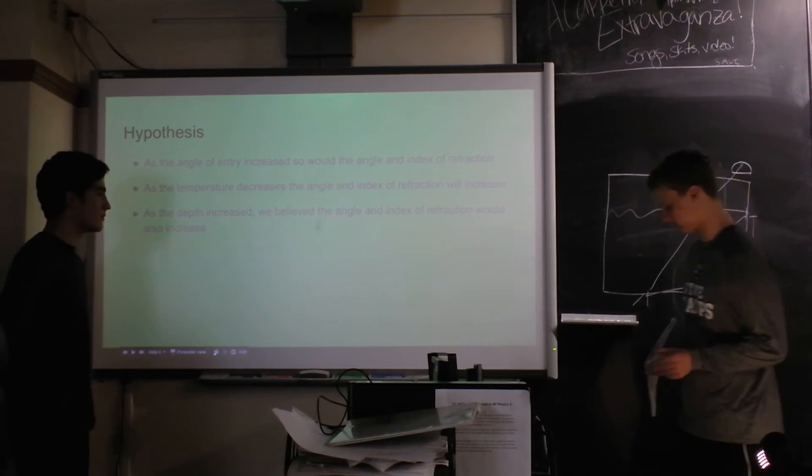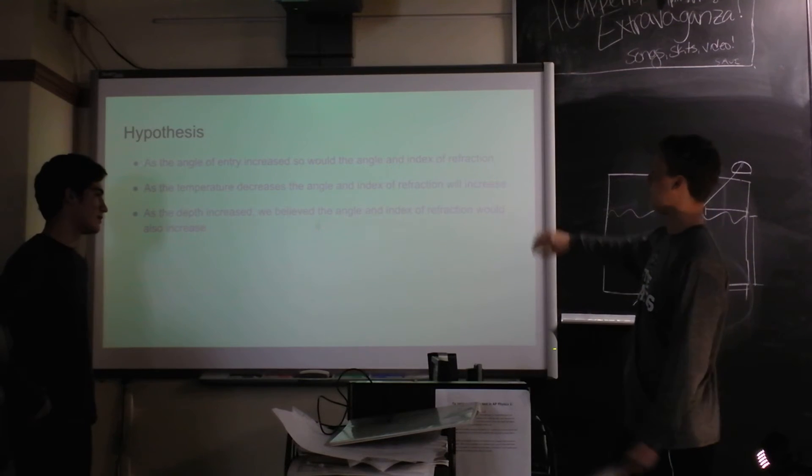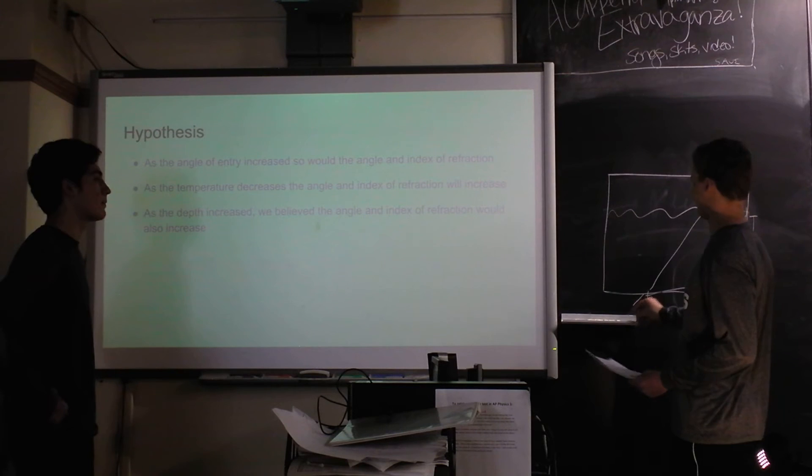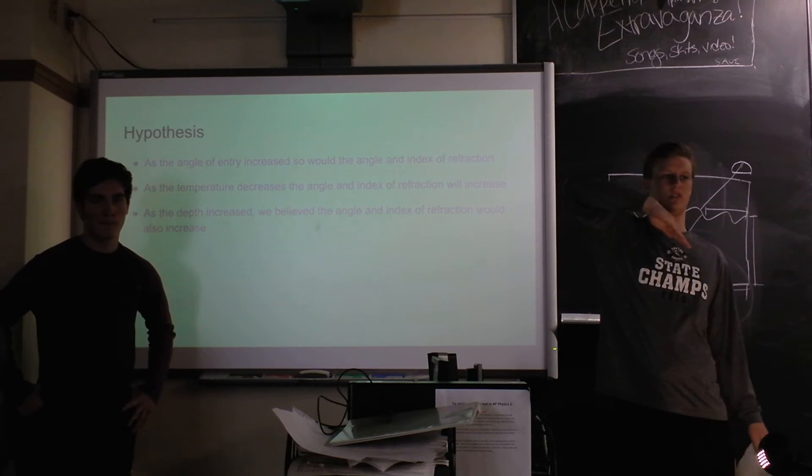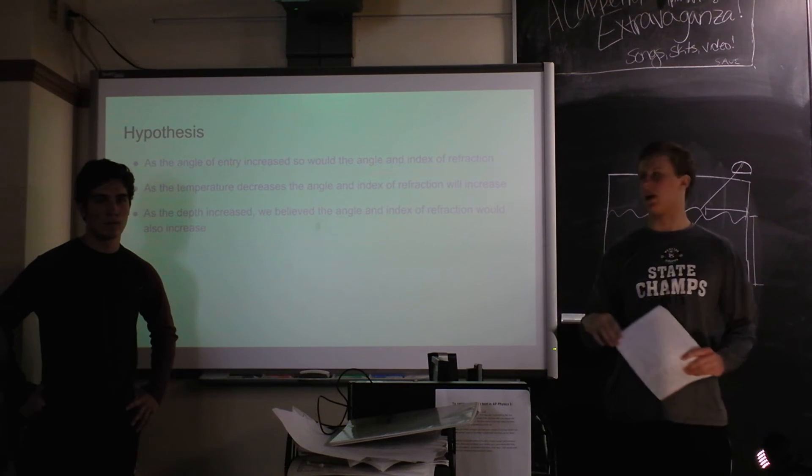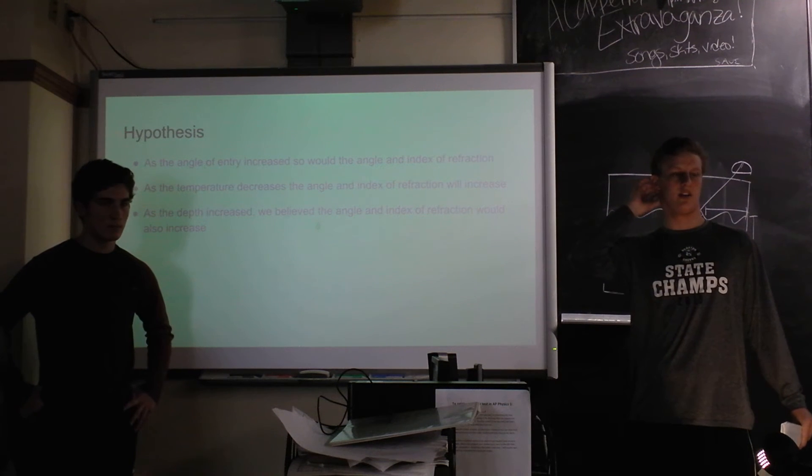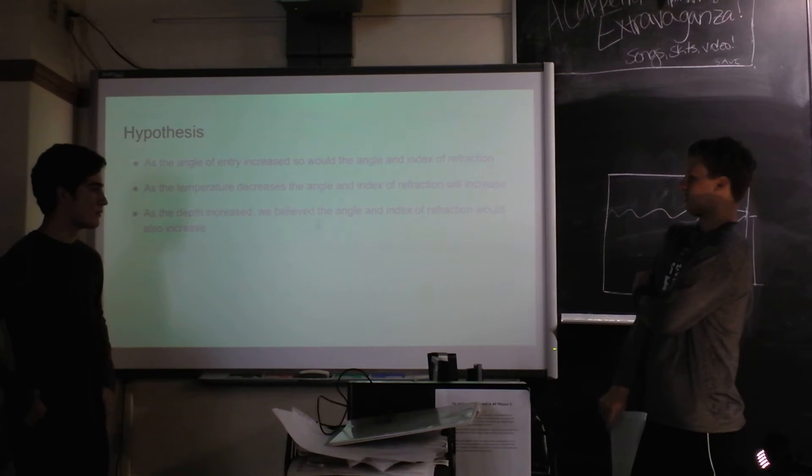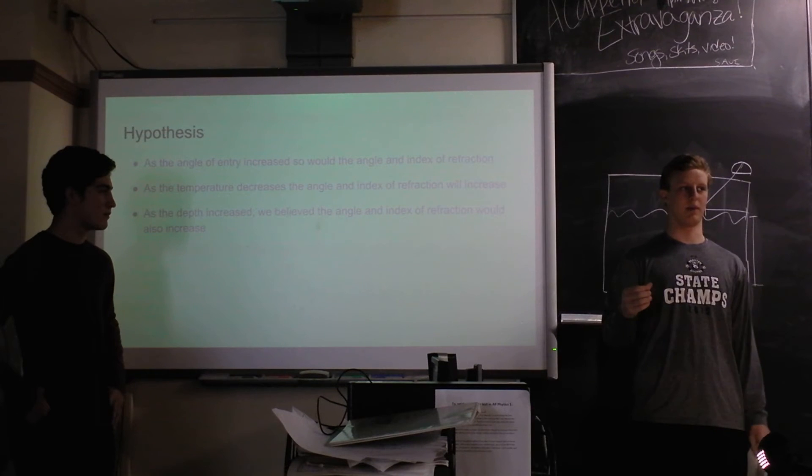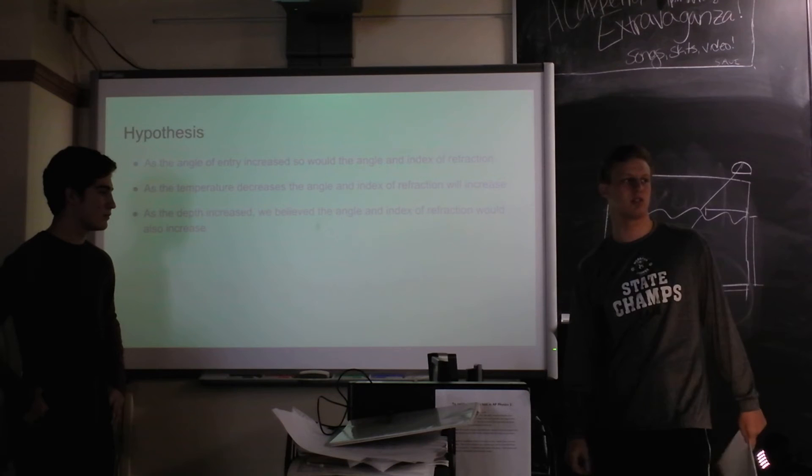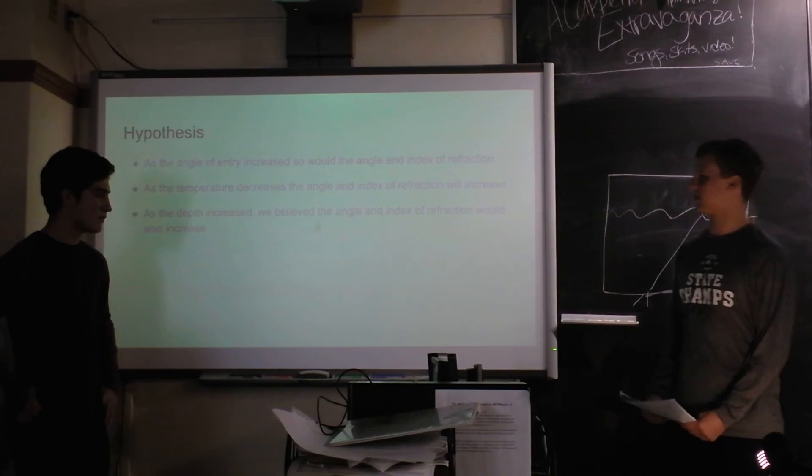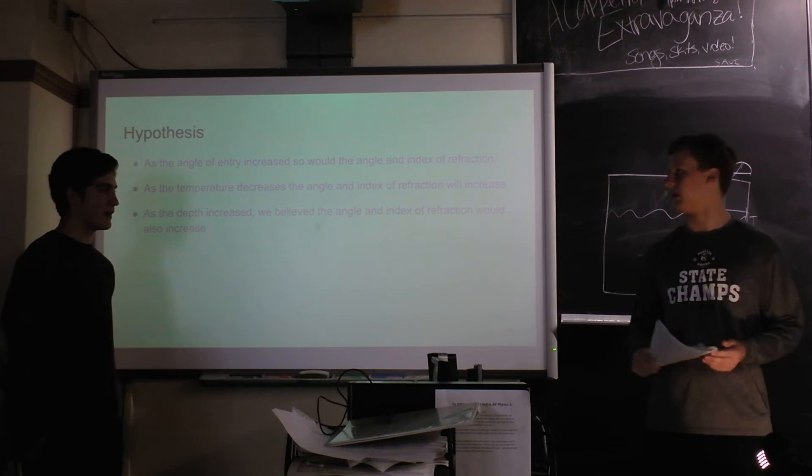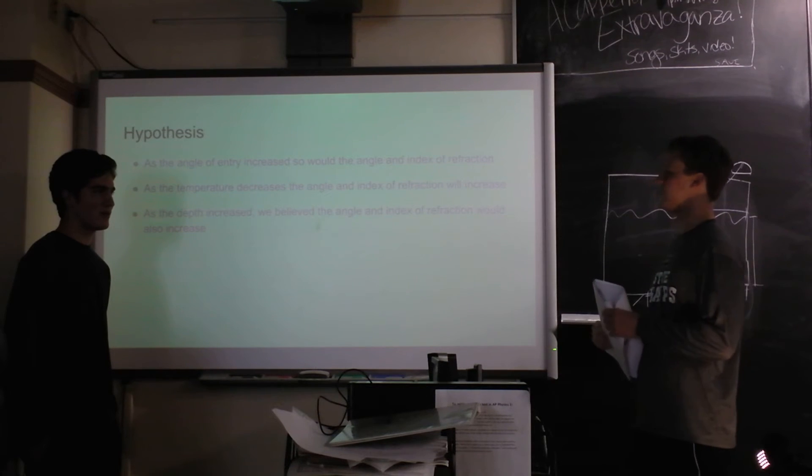For the hypothesis for the first one, we hypothesized that as the angle of entry increased, so would the angle and index of refraction. We hypothesized that if the angle went in at about 20 degrees, and then we did 80 degrees, the 20 degree one would have less of an index of refraction. For the second one, as the temperature decreases, the angle and index of refraction will increase. When we put ice in there, we expected that the angle of refraction would be greater, and so would the index, because it's a slower medium. And the third one, the depth, we were kind of guessing on, but we thought the more water there was, the more area there would be for... I didn't think there would be any change.